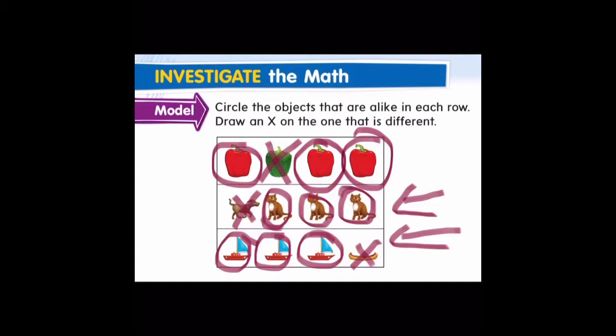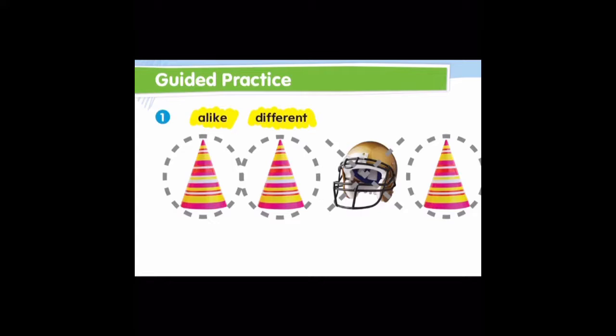Here we are going to circle the objects that are alike and cross out the object that is different. We have three birthday hats and one football helmet. The football helmet is different and the hats are alike.